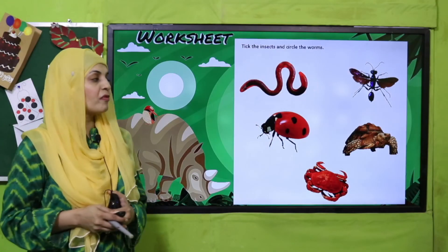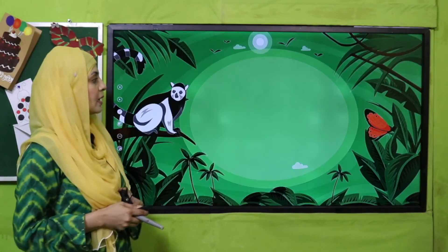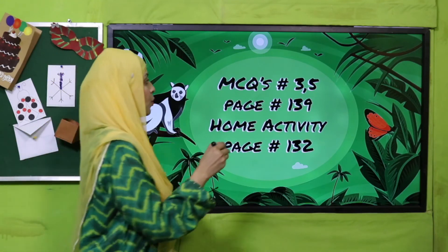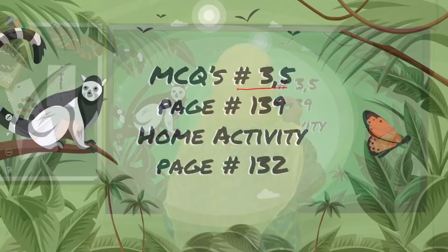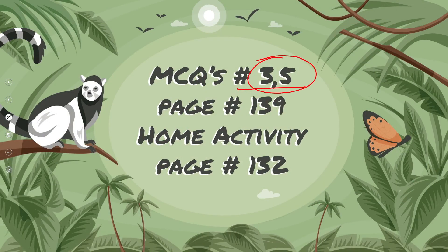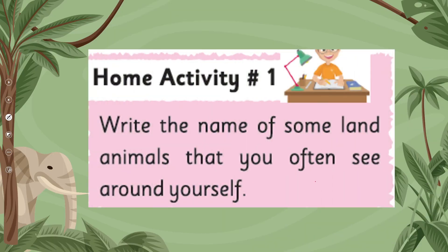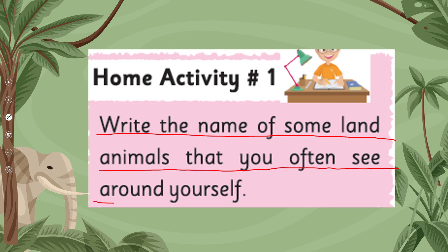For homework, you will do MCQ number three and five in your books on page number 139, and you will do the home activity given on page number 132. The home activity is: write the names of some land animals that you often see around yourself.